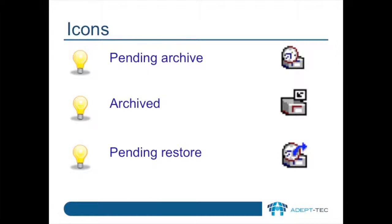Pending archive means that the items have been archived by Enterprise Vault but are not yet completely archived and secure. Archived items are those which are secured and in your archive. From time to time you might also see pending restore icons, but these are usually only seen briefly. Secure in this context means that the item has been backed up or replicated in a supported EV manner.